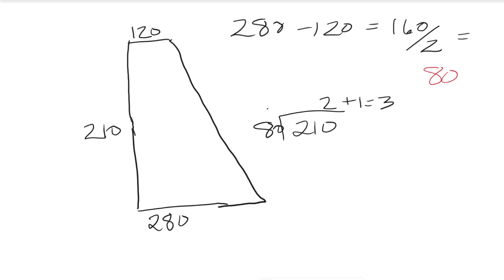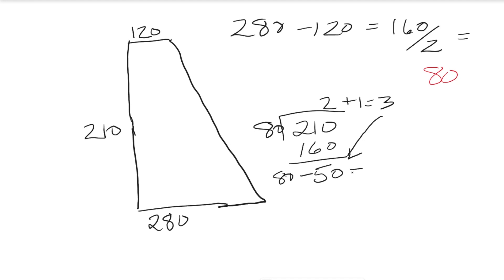To do that, we take 80 times 2 and subtract it from 210. We find we work every third round 50 times and every second round 30 times. We can check our work: 50 plus 30 is 80, and that's our total number of increases.